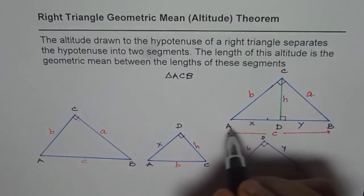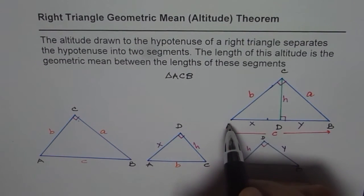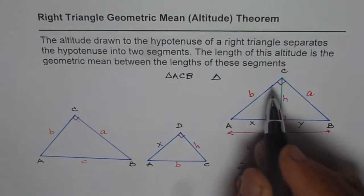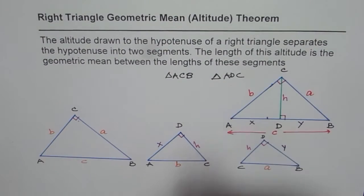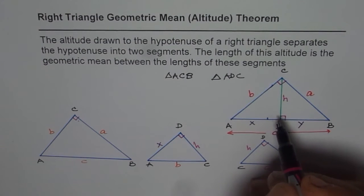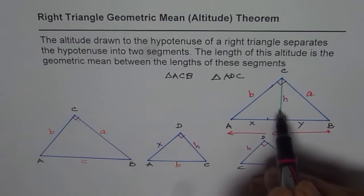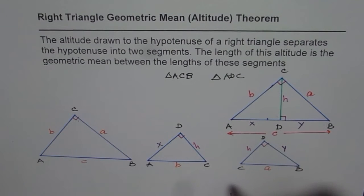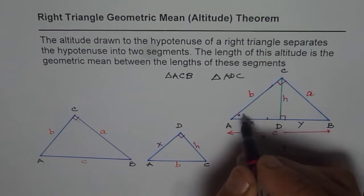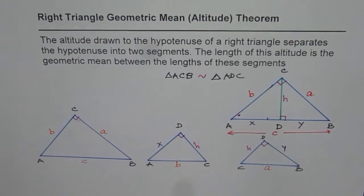So in triangle ACB, C is the right angle. Let's compare it with triangle ADC. So if you observe, you will see that in both these triangles we have one right angle. In triangle ACB, angle C is 90 degrees, and in ADC, angle D is 90 degrees. Second, we have angle A as common. Since two angles are the same, congruent, these two triangles are similar.